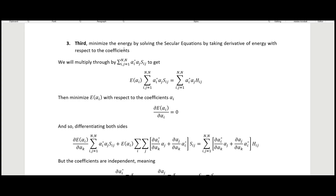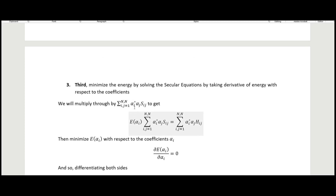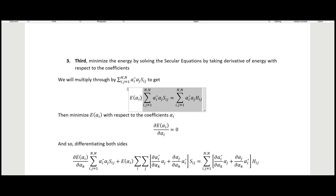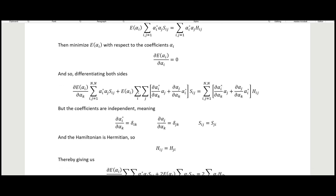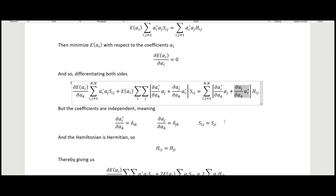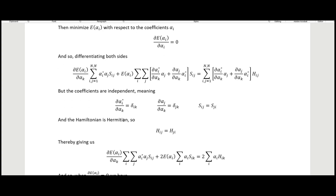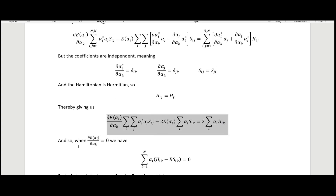Third, we minimize the energy by solving the secular equations, taking the derivative with respect to the coefficients. We multiply through by the denominator and then set the derivative equal to zero. Differentiating both sides, we use the fact that certain terms reduce to Kronecker deltas. We also know S_ij is symmetric — S_ij equals S_ji — and the Hamiltonian is Hermitian, so H_ij equals H_ji. Using all of this, we arrive at a simplified expression.